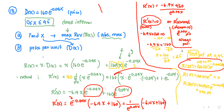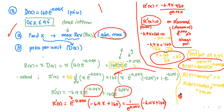Since R(25) = 1471.52 is the largest value, x = 25 is confirmed as the absolute maximum revenue — that's part a. For part b, find the price per unit by evaluating the demand function D at 25: D(25) = 160 × e^(-0.04 × 25) ≈ $58.86, which matches the answer in the back of the document.